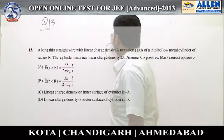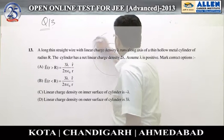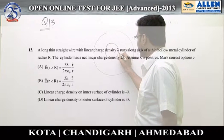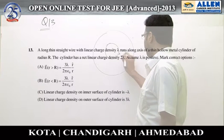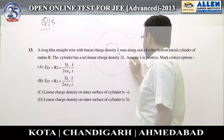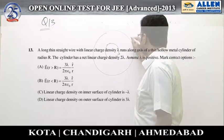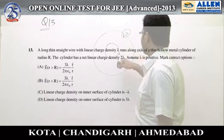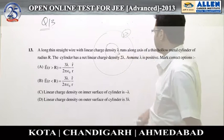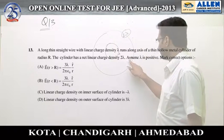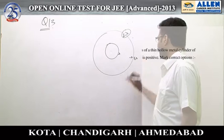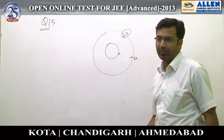Here you have these two conducting sections. If this charge is lambda, it will induce another charge minus lambda here. The total charge per unit length was 2 lambda, so on the outer surface I would have 3 lambda.